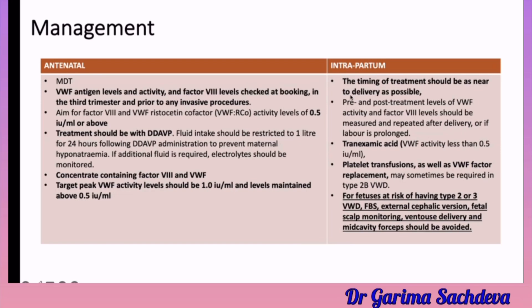During delivery, the timing of treatment should be as near to delivery as possible. Pre- and post-treatment levels of von Willebrand factor activity and factor 8 should be measured and repeated after delivery or if delivery is prolonged. Tranexamic acid should be given if the factor level is less than 0.5, and platelet transfusion as well as von Willebrand factor concentrate may be required in severe cases. For fetuses at risk of type 2 or type 3, you should avoid fetal blood sampling, external cephalic version, fetal scalp electrode monitoring, ventouse delivery, or mid-cavity forceps due to the risk of bleeding.